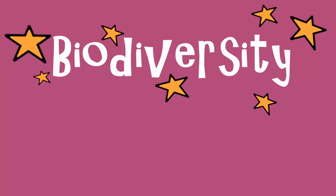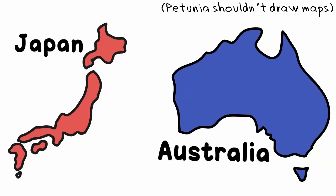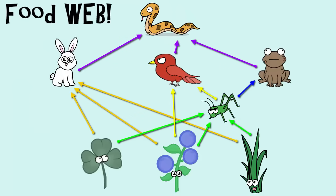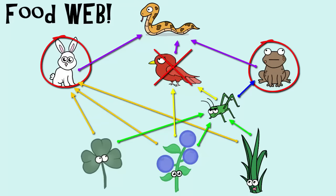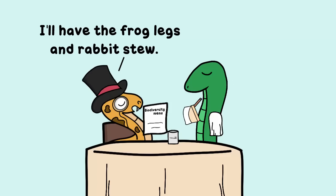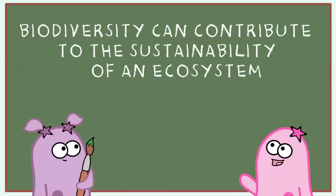A food web can also show biodiversity. Biodiversity is the variety of organisms — all types of organisms — living in a given area. The size of the area we're talking about, as well as the climate of the area, directly affect the biodiversity that is present. Biodiversity can contribute to the sustainability of an ecosystem. For example, if there was a decrease in the amount of small birds in this food web, it's likely that will be harmful to other organisms. However, it is not the only thing that the snakes feed on — they have other options because of the biodiversity. The snakes also eat rabbits and frogs, so because of this biodiversity, the ecosystem might be more resilient to changes such as these and possibly recover.